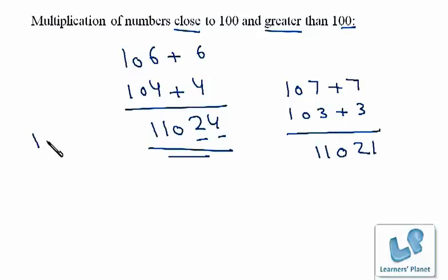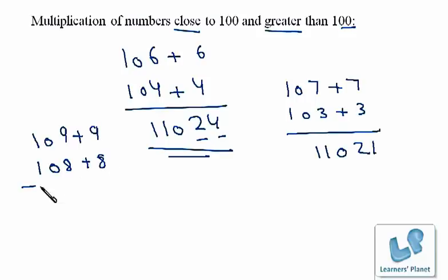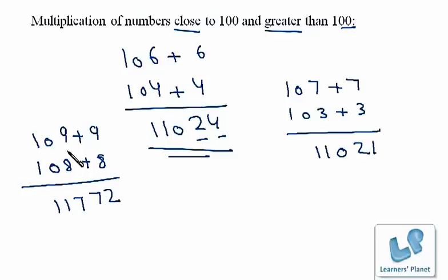Yet another example: 109 and 108. This is plus 9 and this is plus 8. Nine into 8 is 72, and 109 plus 8 is 117. So the product of 109 and 108 is 11772. I hope you understood this method.